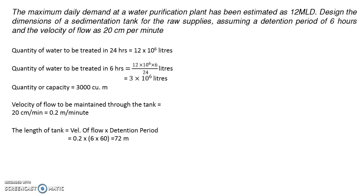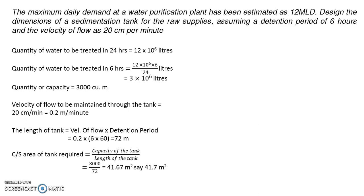Now that we know the length, let us calculate the cross-sectional area of the tank required. The cross-sectional area equals the capacity of the tank divided by the length: 3000 ÷ 72 = approximately 41.67 square meters.